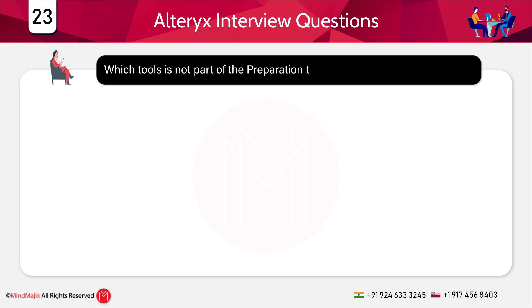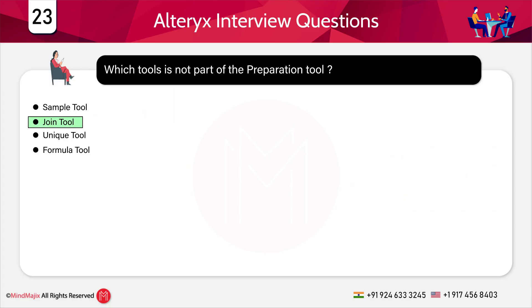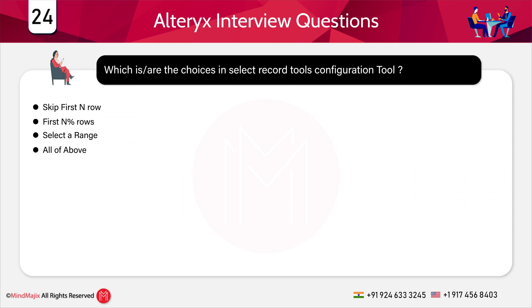Which tool is NOT part of the Preparation tools? Given options: Sample tool, Join tool, Unique tool, and Formula tool. You should remember that the Preparation tools include the Sample tool, Unique tool, and Formula tool. The Join tool is part of the Join operations — not the Preparation tools.